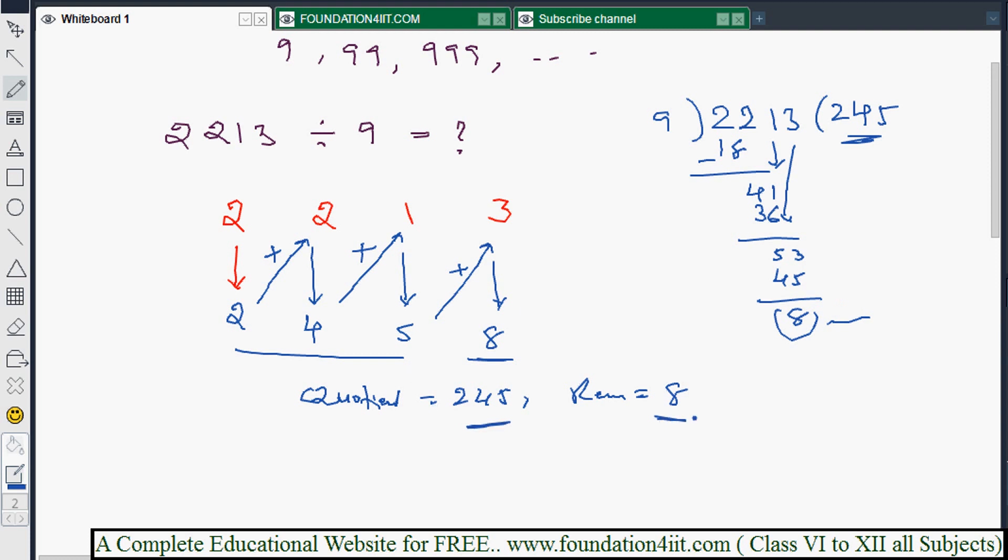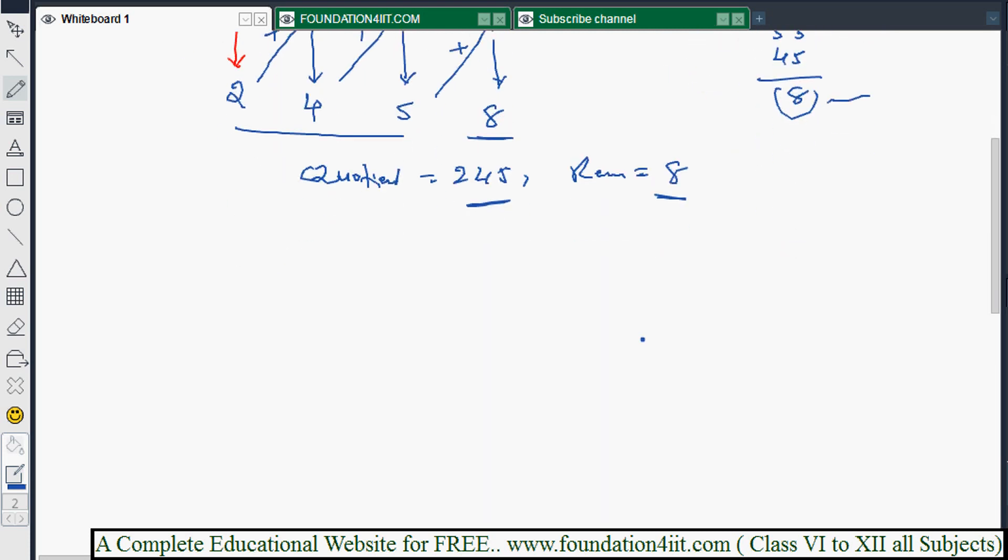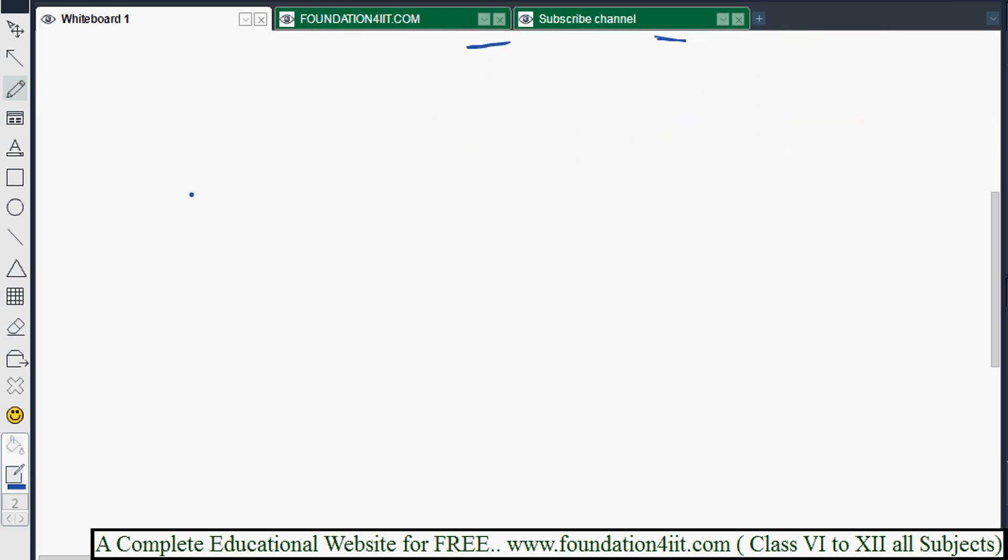9 times 4 is 36. Subtract to get 5 and bring down the next number, which is 3. 9 times 5 is 45 with remainder 8. So we get 245 with remainder 8, the same result.